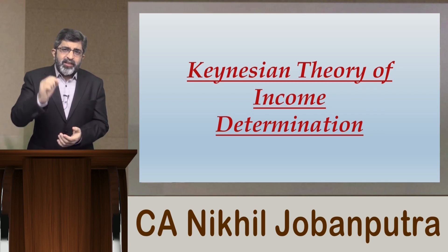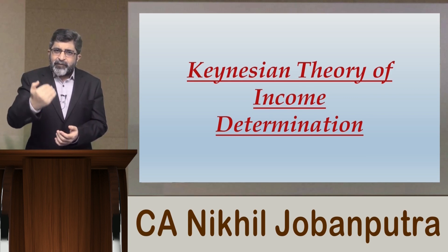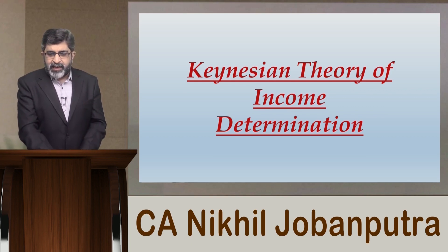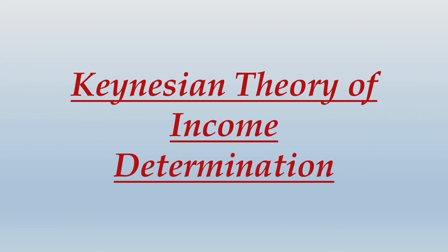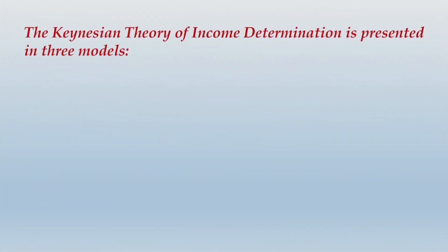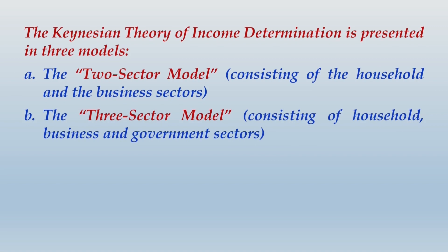I am going to give you some important notes initially and I want you to write them systematically. Then with every component discussed further, I will go into detail as we proceed. This is the second unit of the first chapter. Under your heading, write a subheading: the Keynesian theory of income determination is presented in three models — the first is the two-sector model consisting of the household and business sectors.